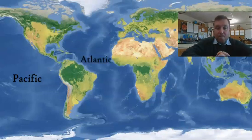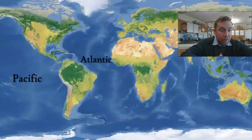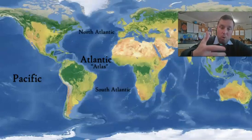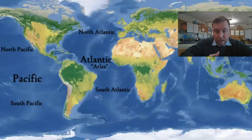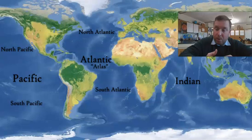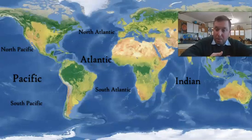The Atlantic is named after the Greek term for Atlas, and there is a North and South Atlantic, as well as a North and South Pacific. The Indian Ocean is named after the largest country near it, the subcontinent of India, which kind of sticks out into the ocean like a peninsula.